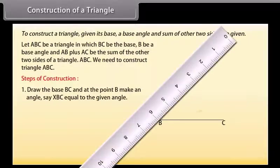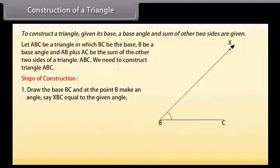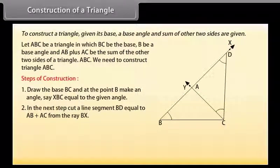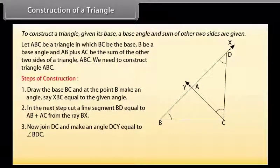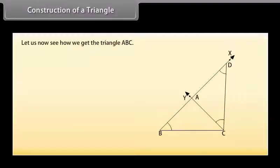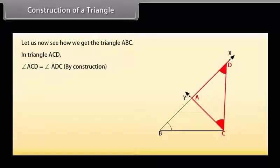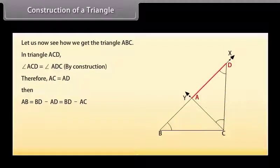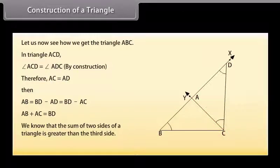Draw the base BC and at point B make an angle XBC equal to the given angle. Cut a line segment BD equal to AB plus AC from the ray BX. Now join DC and make an angle DCY equal to angle BDC. Let CY intersect BX at A. Then ABC is the required triangle. In triangle ACD, angle ACD equals angle ADC by construction, so AC equals AD. Then AB equals BD minus AD equals BD minus AC, giving AB plus AC equals BD. Since the sum of two sides of a triangle is greater than the third side, ABC is a valid triangle.